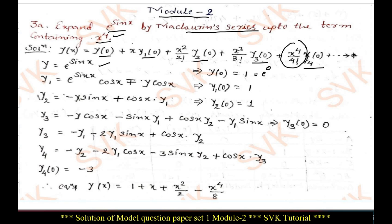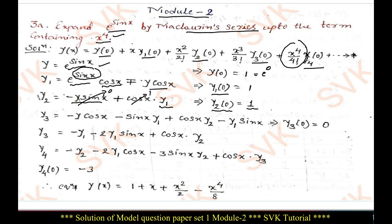Now find the derivative of e^(sin x). The differentiation of e^(sin x) is e^(sin x) into derivative of sin x, and differentiation of sin x is cos x. Since we defined e^(sin x) as y, we can write y1 = y·cos x. Putting x = 0, y1(0) = 1. Similarly, find y2 by applying the product rule: y2 = y·(−sin x) + cos x·y1. Putting x = 0: sin 0 vanishes, cos 0 = 1, y(0) = 1, so y2(0) = 1.